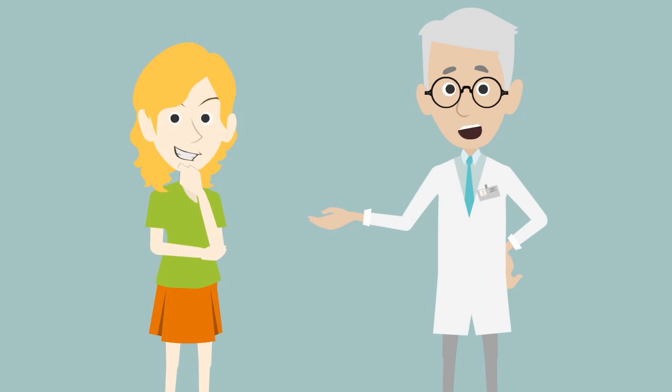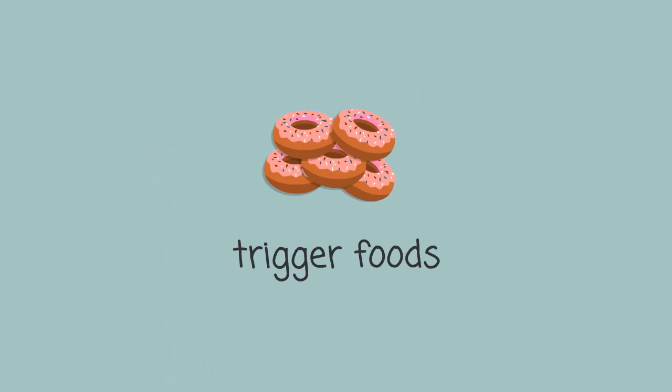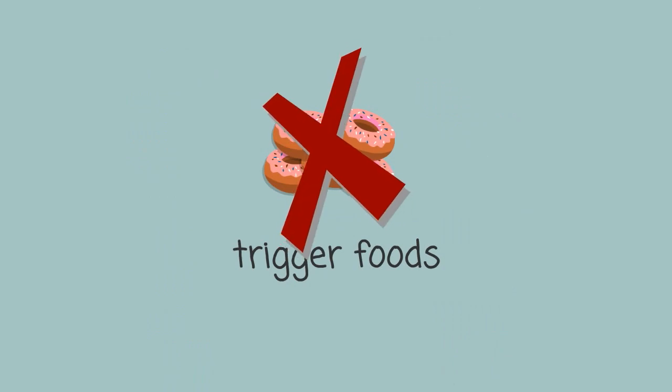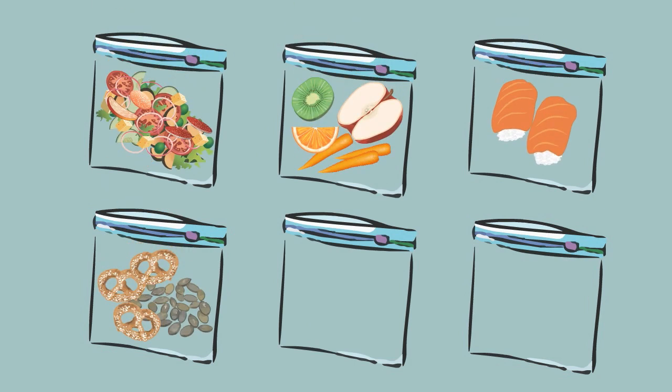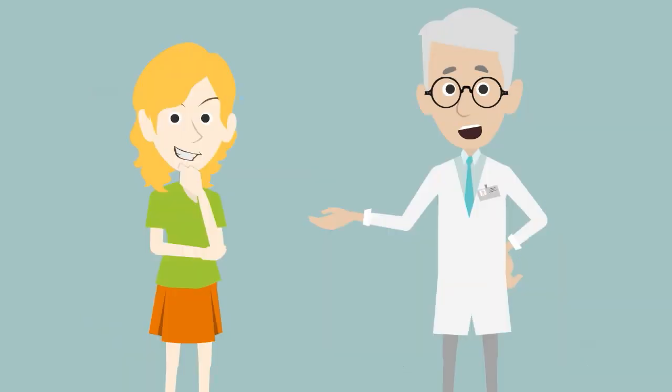Next, start using some simple techniques to manage your emotional eating episodes. Do not buy or keep your trigger foods in your home. Instead, pre-portion out healthy snacks that support your nutritional needs in small bags or containers. Keep these on hand to eat when you have cravings, this way you can cut down on calories and boost your mood at the same time.